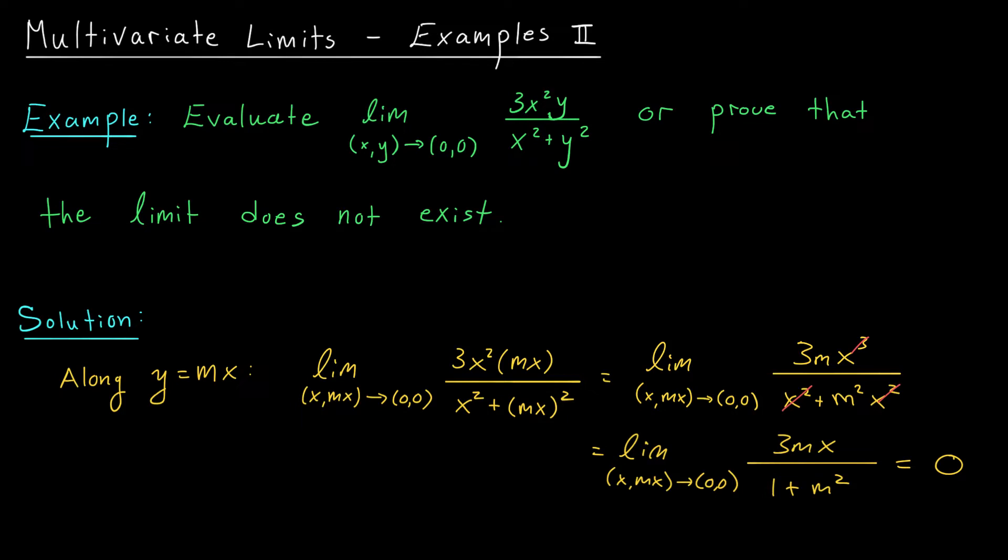Now that's pretty cool. We've just shown that no matter which line we follow to get to the origin, my function will always approach a value of 0. Now that's not enough to conclude that the limit is equal to 0, because of course there are many other types of paths that we can take to the origin. Let's test a few more paths just to get a feel for how our function's behaving. On the next slide, we're going to check parabolic paths.